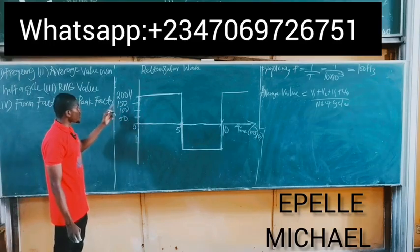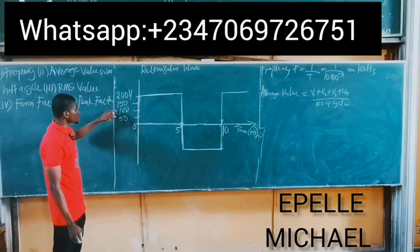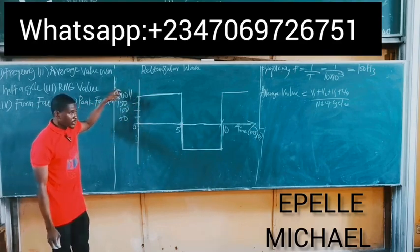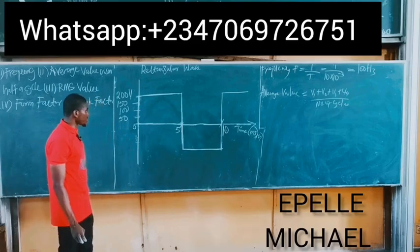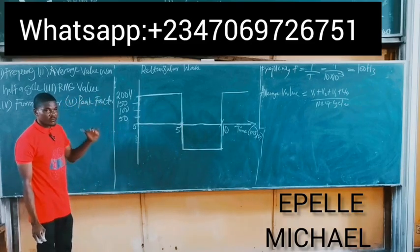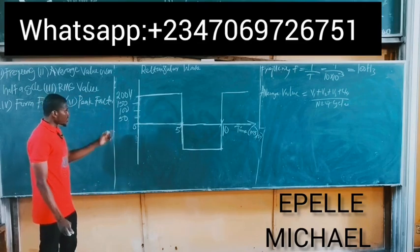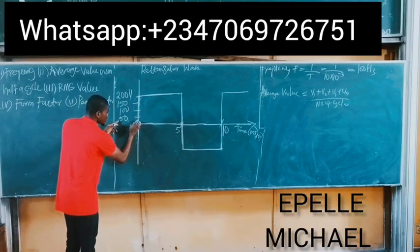50, 100, 150 and 200, which is simply 1, 2, 3, 4. Number of cycles is 4. So let's find the mid-ordinates now. Distance between each middle point of the given voltages. Middle of 50 is what? 25. So it means V1 is equal to 25.